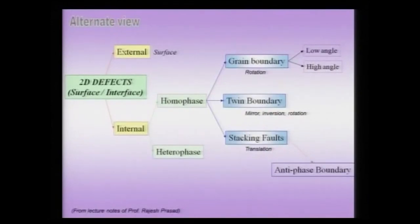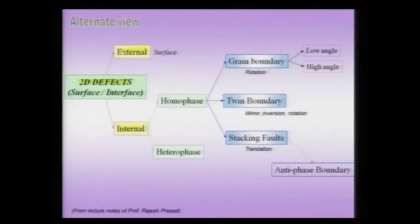We can look at the same classification differently: two-dimensional defects can be external or internal. External typically refers to a surface — an interface between the crystal and vacuum or air. An internal interface could be between the same kind of phase, which we call a homophase boundary, or it can be a heterophase boundary in which the phases on either side of the boundary are of different type.